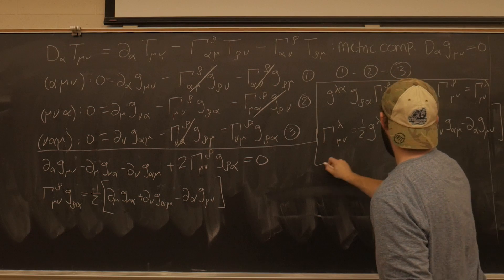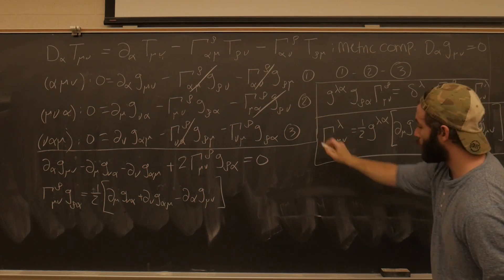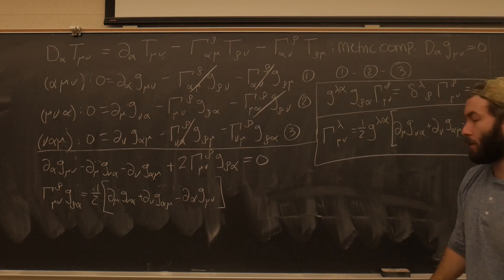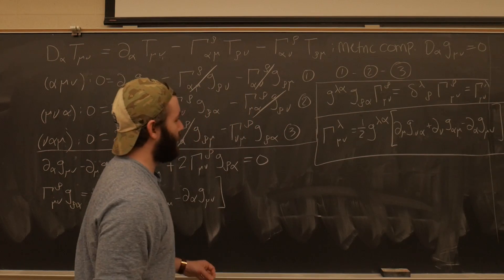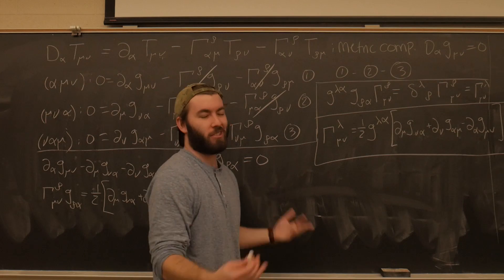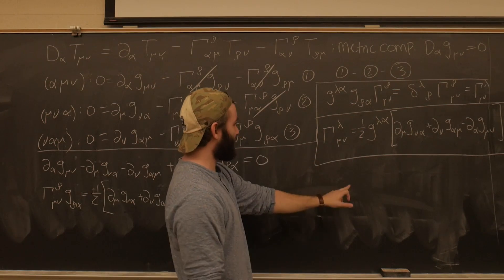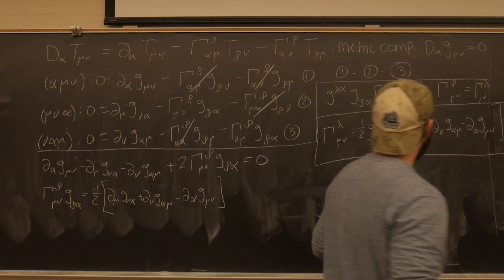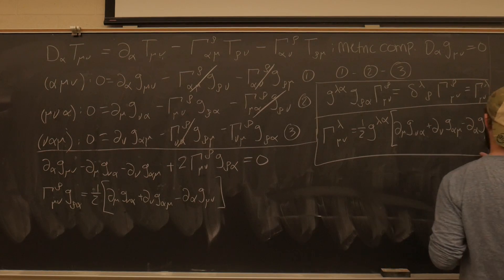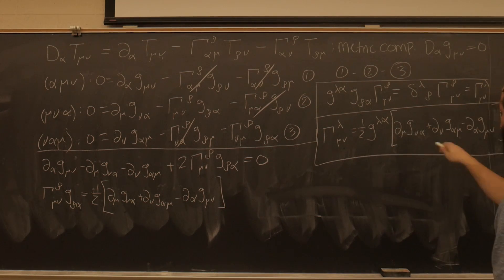There we have what are defined as the Christoffel symbols — I'm not going to try to spell Christoffel. This is called the Christoffel symbols of the second kind. If we lower the lambda index, then it's called the Christoffel symbols of the first kind for some reason — I don't quite understand that, but it is what it is. So now we've uniquely defined the connection coefficients in terms of the metric.